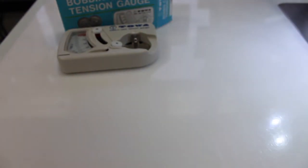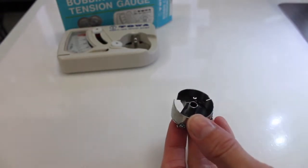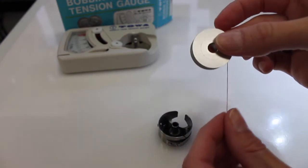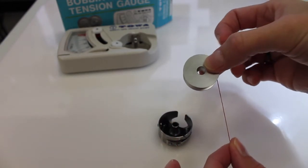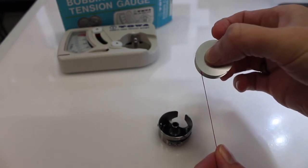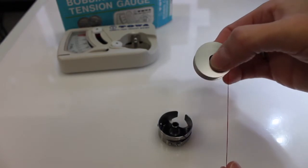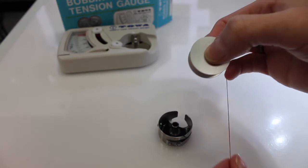I'm going to set it aside for a minute, and here we have our bobbin case. When we put our bobbin into the bobbin case, we want to make sure that our thread tail is hanging down on the right-hand side. If it's falling down on the left-hand side, the bobbin is going to spin counterclockwise, and that is incorrect. You want the thread hanging down on the right, and as we pull on that, our bobbin is spinning in a clockwise direction.